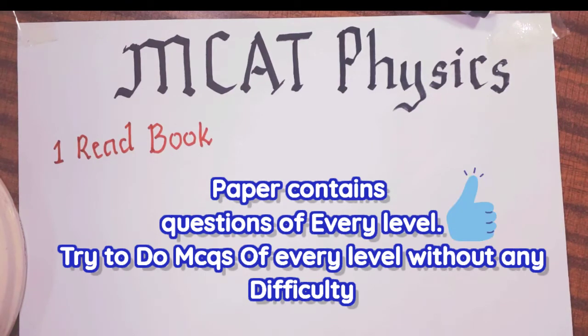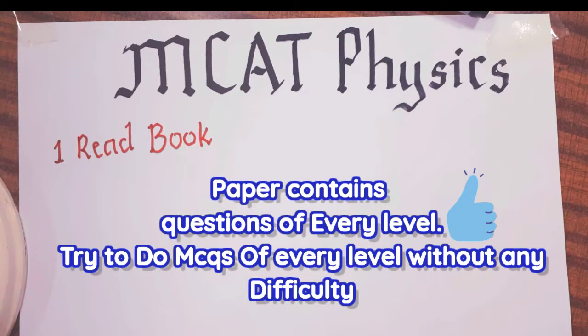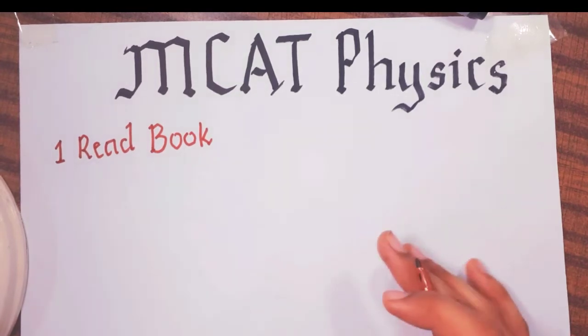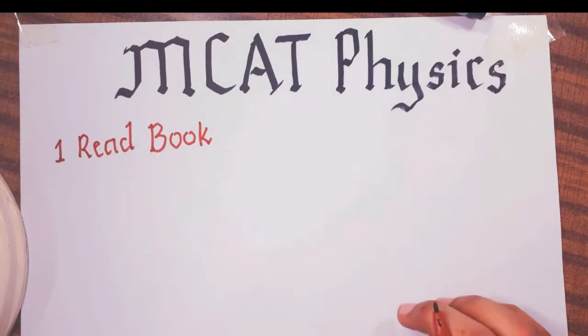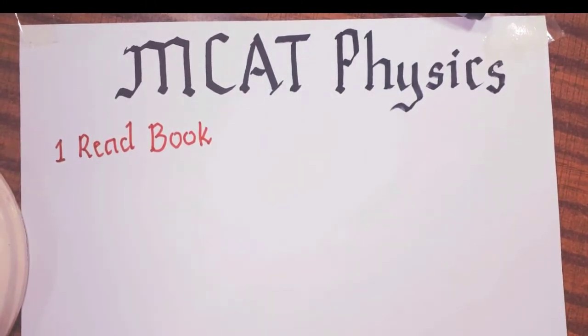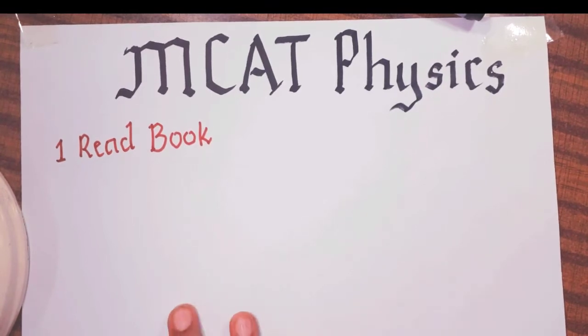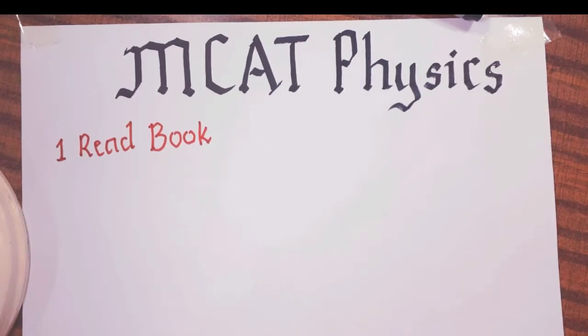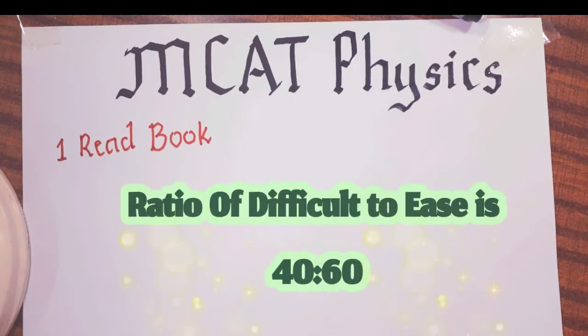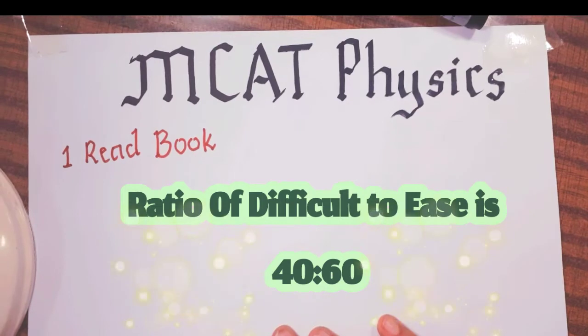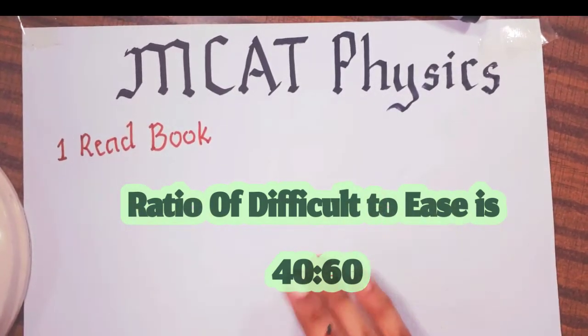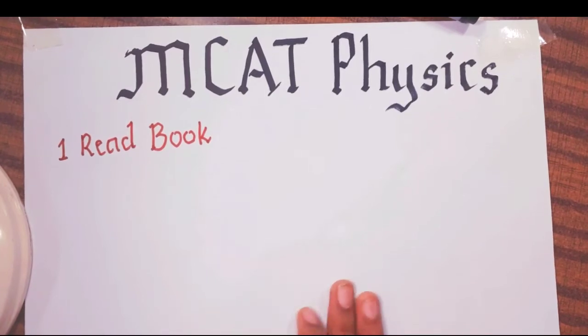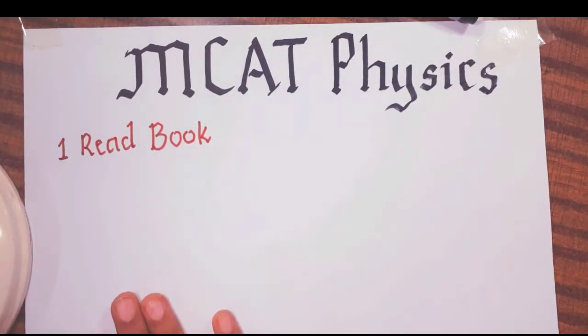Like Faraday's law mein kaunsa method use hua hai - it's not a difficult question. Velocity definition, it's not a difficult question. Acceleration dimension, it's not a difficult question. So in every paper, and even in every portion, some questions in biology or physics, there are some difficult questions. Like if you have 30% easy, then you will have 20% difficult questions. So you have to do the easy questions, and the easy questions you miss, especially in physics, because physics books you don't read.